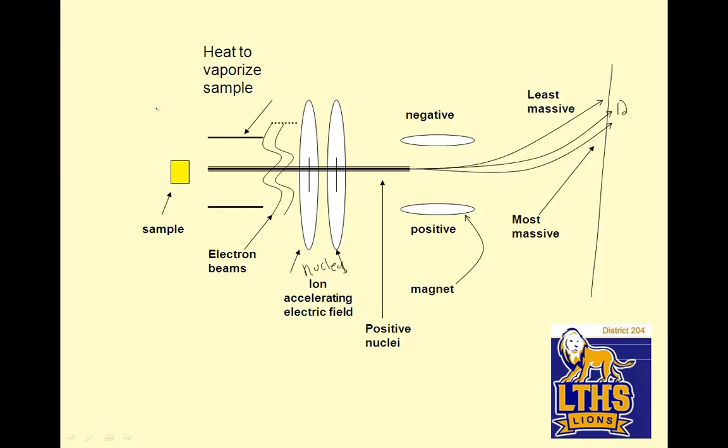And it's being accelerated. So the positive nuclei are going to be attracted to the negative thing and repelled by the positive thing, and depending on their mass will tell you how much they bend. If they're the heaviest thing in the world, they will hardly bend at all, right? And if they weigh next to nothing, they will bend all the way up there.